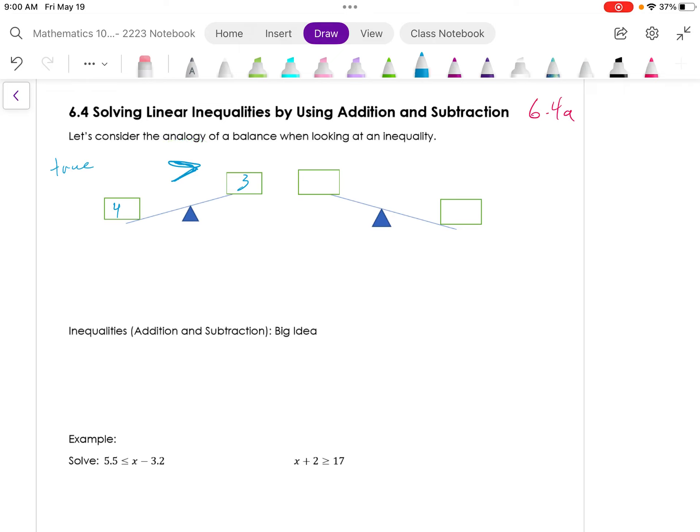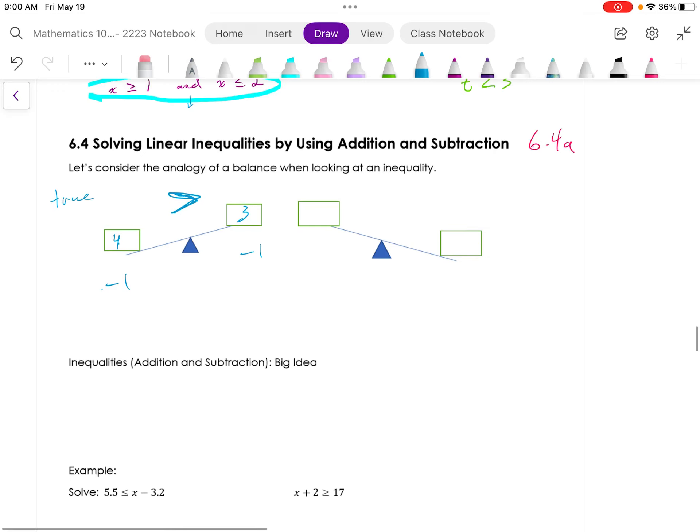So let's maybe try to subtract or add negative integers. Let's just subtract 1. If I subtract 1 from both sides, the left-hand side would be greater than the right-hand side still because it would be 3 is greater than 2.